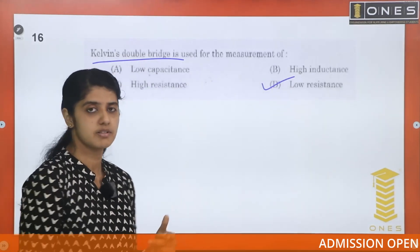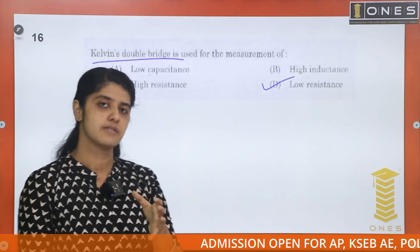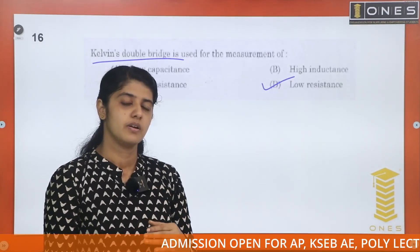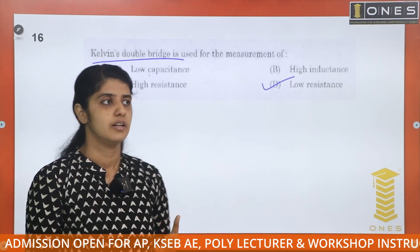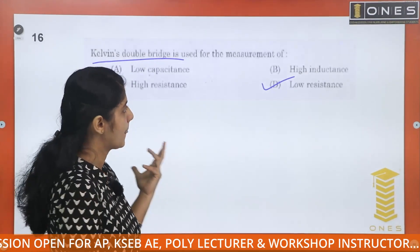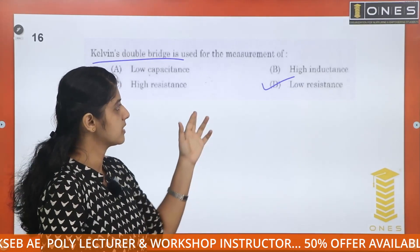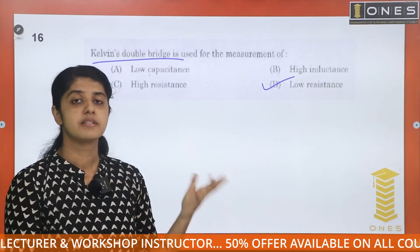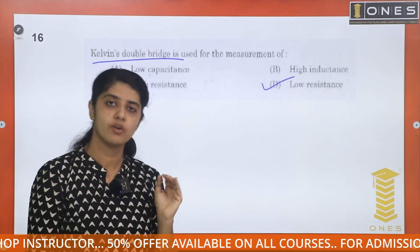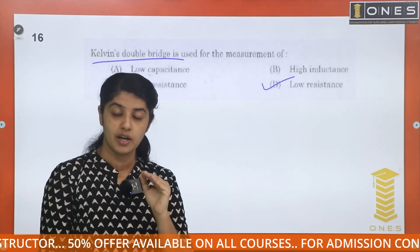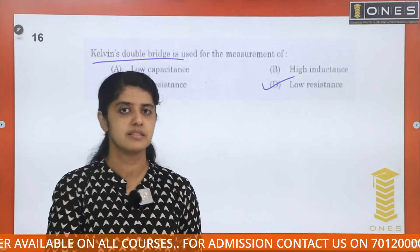For inductance measurement, there are three bridges: Maxwell's bridge, Anderson's bridge, Hay's bridge, and Owen's bridge. Maxwell's bridge measures inductance in terms of UCM and also the Q factor — the quality factor — for small UCM values.